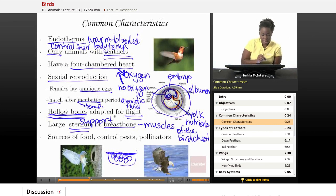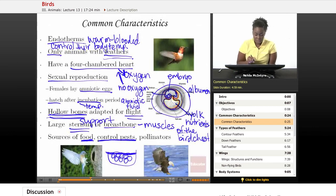And finally, birds have different sources of food. They are sources of food, and they also help to control pests such as insects and different things that may get out of hand or become overpopulated. And they are great pollinators. They help the flowers and the plants to continue to grow.